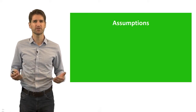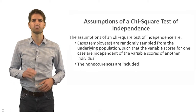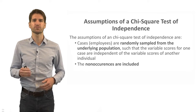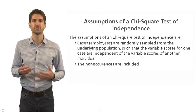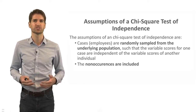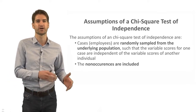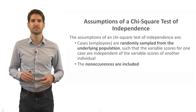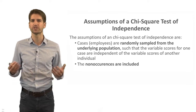Let's talk about the statistical assumptions underlying a Chi-Square Test of Independence. There are two major assumptions. The first is that the cases or observations are randomly sampled from the underlying population, such that the variable scores for one case are independent of the variable scores of another case or individual.